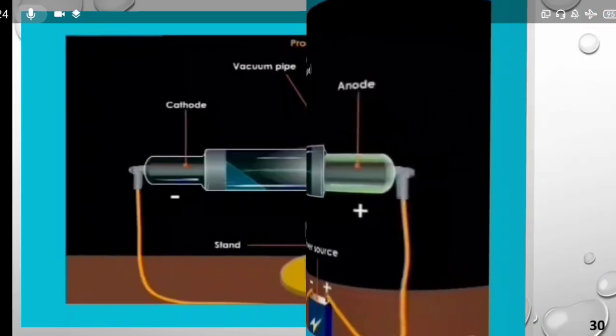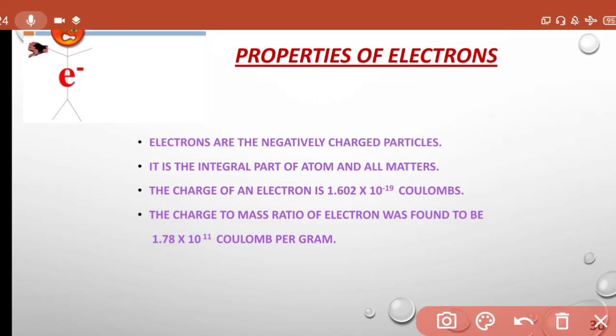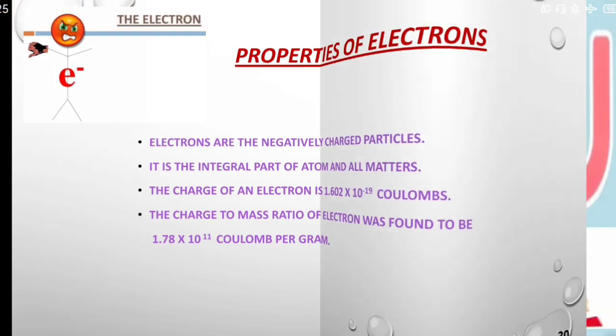Now, let's see the properties of electrons. Electrons are the negatively charged particles. It is the integral part of atom and all matters. The charge of an electron is 1.602 into 10 to the power minus 19 coulombs. The charge to mass ratio of electron was found to be 1.78 into 10 to the power 11 coulombs per gram. Thomson noticed that the value of charge to mass ratio was same for all electrons irrespective of the nature of the gas and the material of the electrodes.